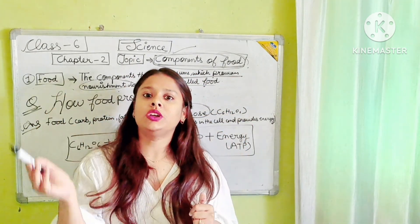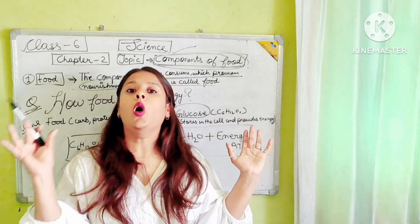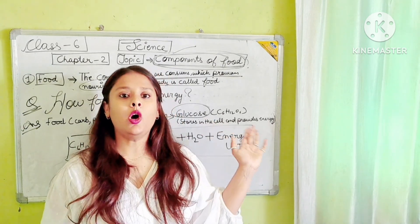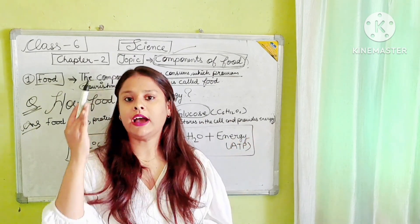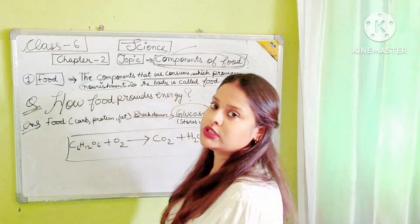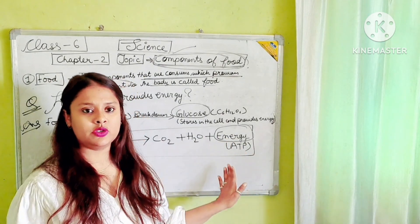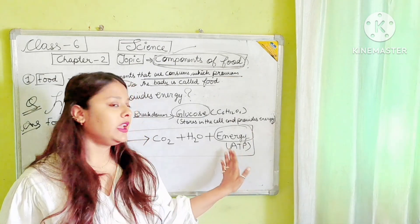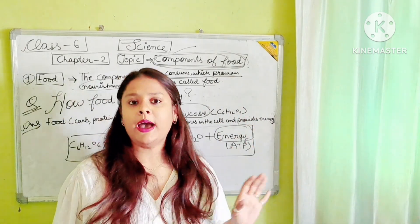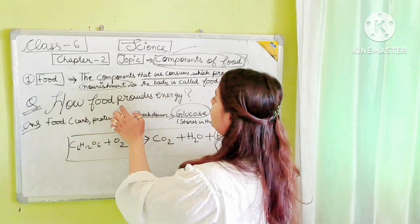The structural and functional unit of life is called a cell. So glucose is stored in the cell. We humans inhale oxygen and exhale carbon dioxide. When this glucose reacts with oxygen, it produces carbon dioxide, water, and energy. The energy is released in the form of ATP. ATP stands for adenosine triphosphate. ATP is called the energy currency of the cell.